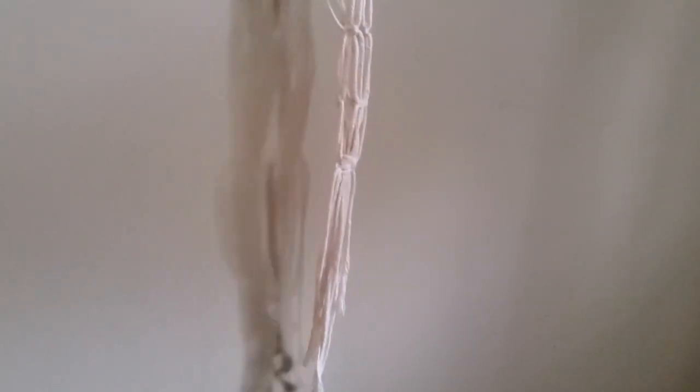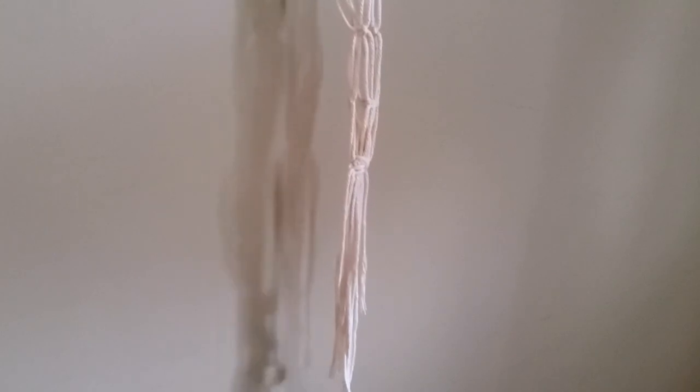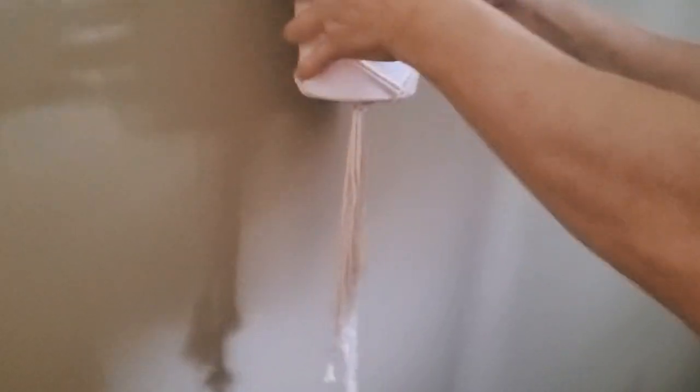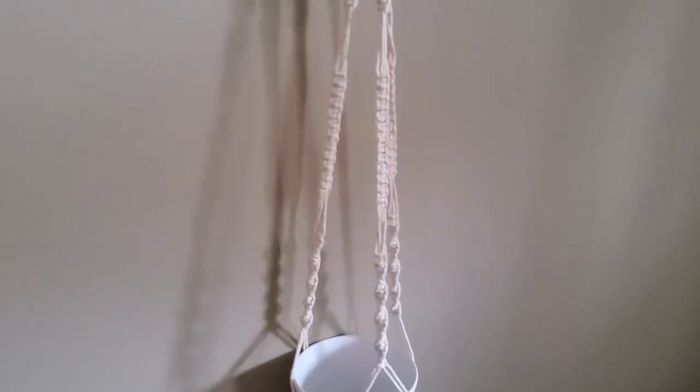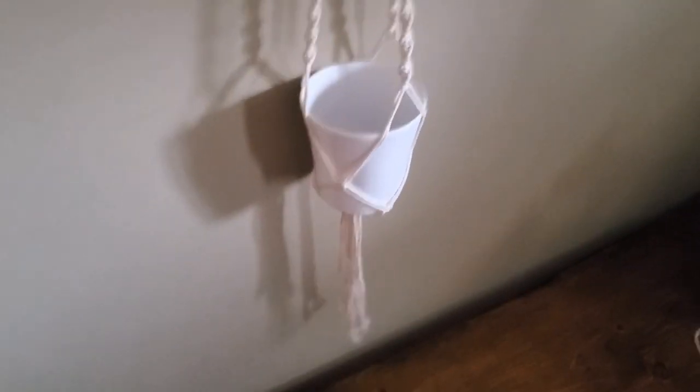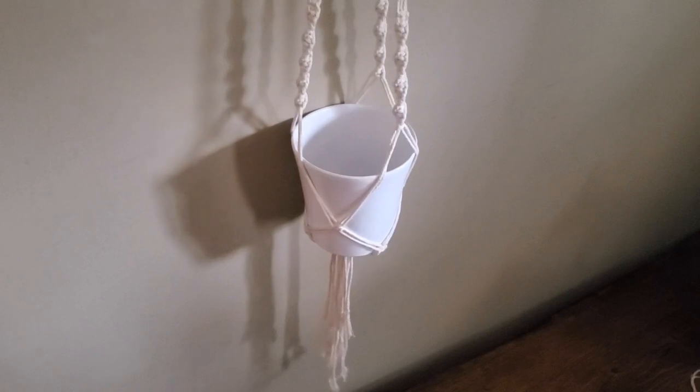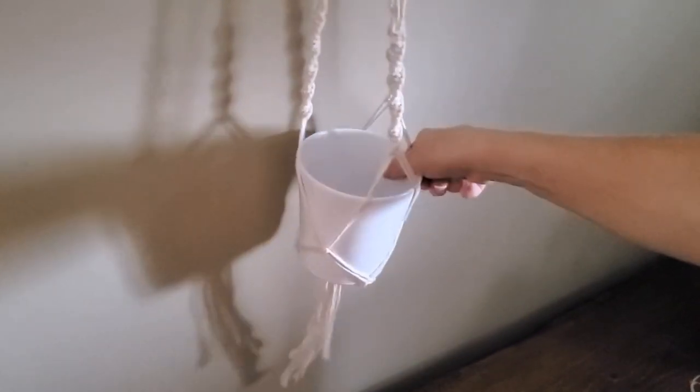Now the cords at the bottom, you can play around with them. You can cut them different lengths. I'm just going to leave them all like that. So this is the pot that this hanger was made for. It's a fairly small pot, but it's going to be very nice with a bright green foliage in it. And I will show you where I'm going to hang it.